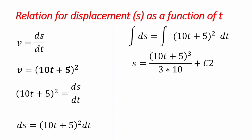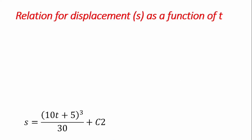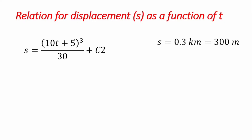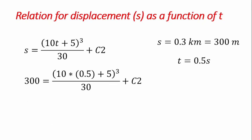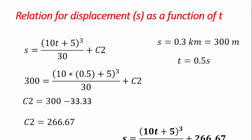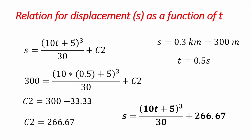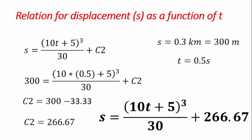Integrating, we get s equals (10t plus 5) cubed divided by 3 times 10, plus c2. To find c2, we use the given conditions: s equals 0.3 kilometers which equals 300 meters, and t equals 0.5 seconds. Substituting these values into the equation gives c2 equal to 266.67. We rewrite the displacement equation replacing c2 with its value to obtain the final relation for displacement.